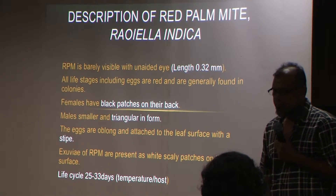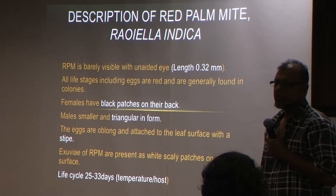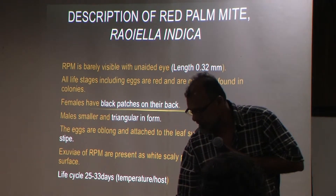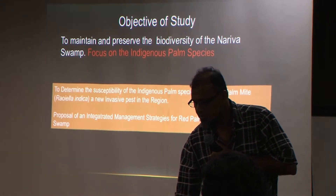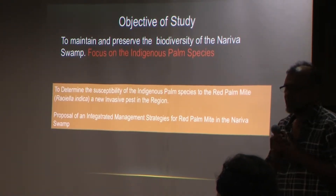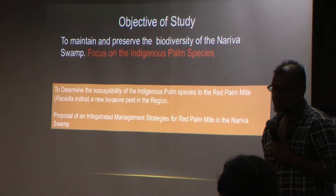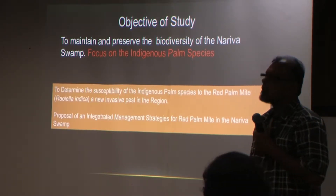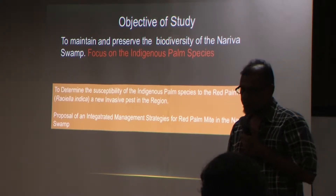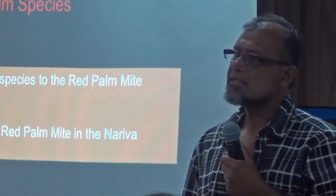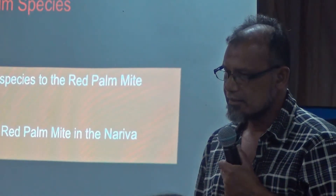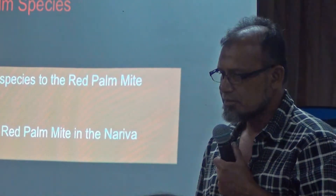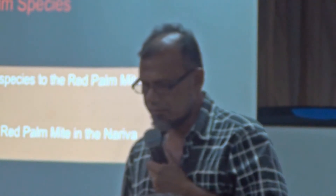A very brief description — a lot of this has been spoken before, so I won't go too much into that. The main objective was really to preserve the biodiversity of the Nariva Swamp, with my main focus on the palm species. This work involved three particular areas: baseline studies to investigate the distribution of those palms found in the river swamp, susceptibility, and probably coming up with some method of control.